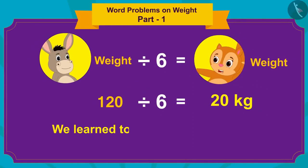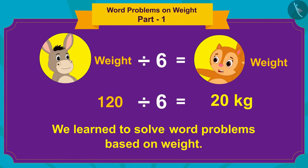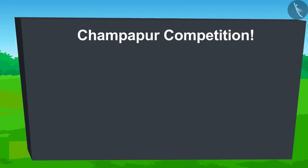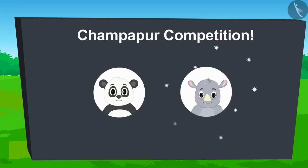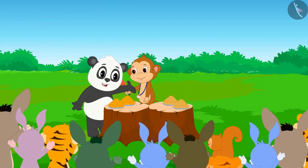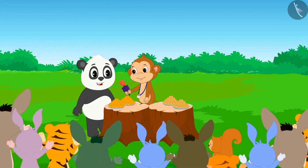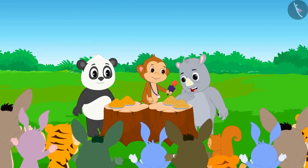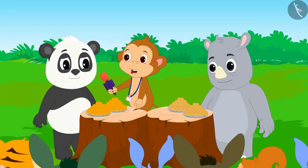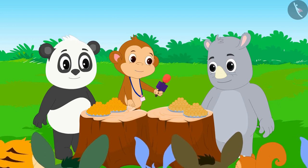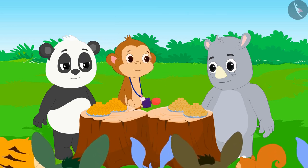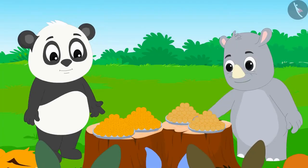In the previous video, we learned to solve word problems based on weight. In this video, we will see some more interesting examples. A unique competition between Golu Panda and Gagu Hippopotamus has been organized in Champapur. Golu will only eat Moti Chooladoos and Gagu will only eat Besan Ladoos. Whoever eats more Ladoos in one minute wins.